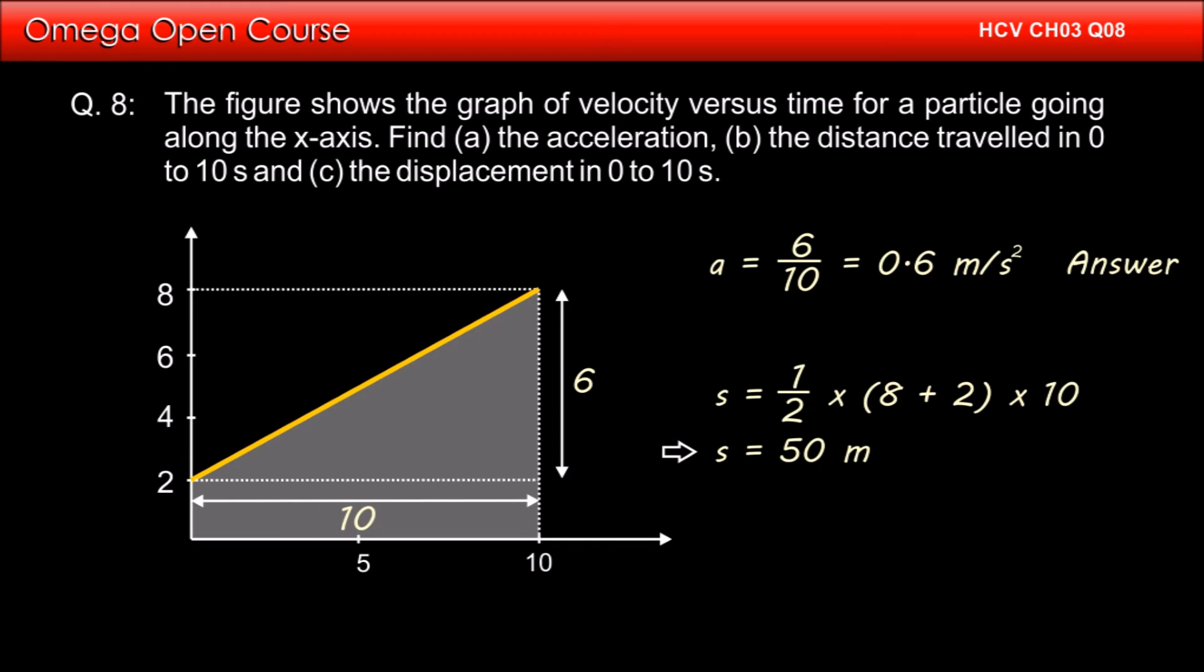Since the velocity of the particle does not change its direction during the motion, the displacement and distance are equal. Therefore, both the displacement and distance is 50 meters. This is the answer to part B and part C of the question.